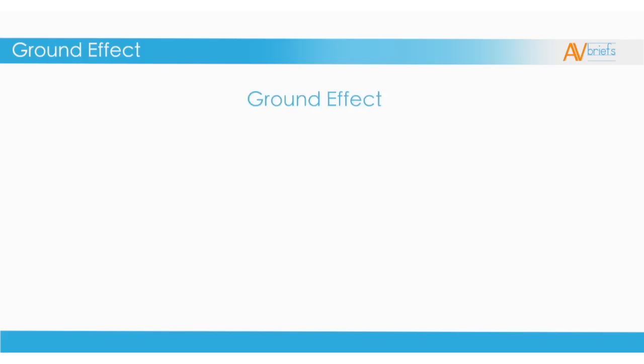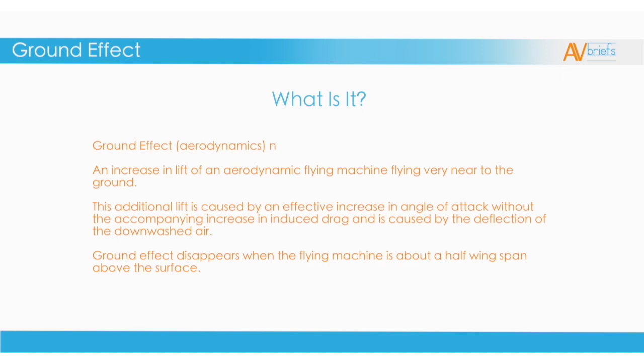Let's take a look at ground effect and gain an understanding of what it is and how to work with it. In aerodynamics, ground effect is an increase in lift of an aerodynamic flying machine very near the ground. This additional lift is caused by an effective increase in angle of attack without an accompanying increase in induced drag, and it's caused by the deflection of the downwashed air. Ground effect disappears when the flying machine is about a half wing span above the surface. Any increase in lift will create an increase in drag — ground effect is the exception to that rule.